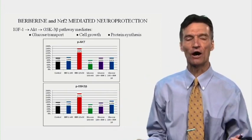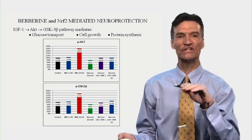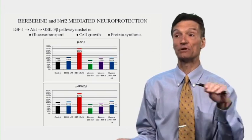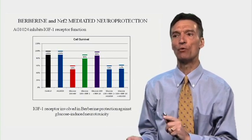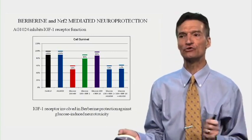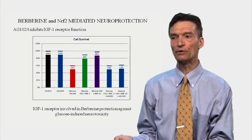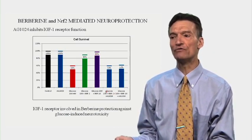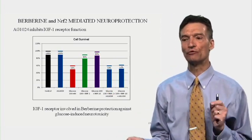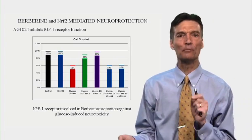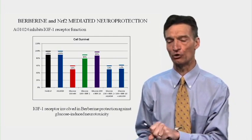Berberine is overcoming the deleterious effects of hyperglycemia on this insulin signaling anabolic and cell protection pathway. AG1024 inhibits IGF-1 receptor function. With high sugar, cells don't look so good; high sugar plus berberine shows preservation. But if you knock out the IGF-1 receptor, berberine no longer is helpful. So IGF receptor function is involved in berberine protection against hyperglycemia-induced neural cell death — neurotoxicity.